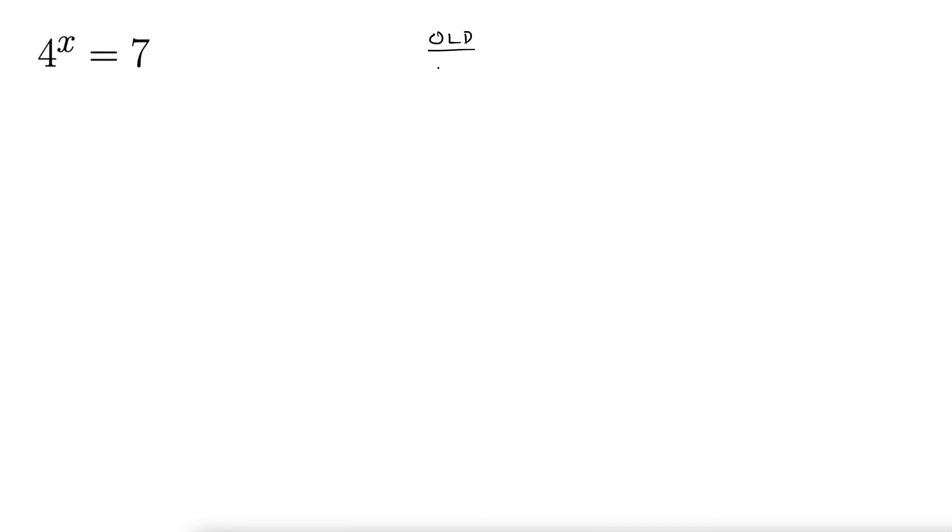An easier version might be 4 to the x equals 16. Then we could just say 4 to the x equals 4 squared, which tells us that x equals 2. That was nice when that happened.